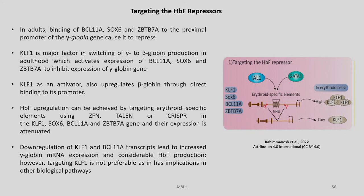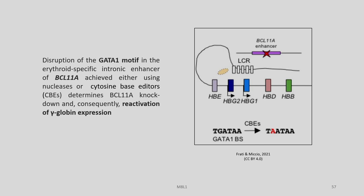Downregulation of KLF1 and BCL-11A transcripts leads to increased gamma globin and HbF production. However, targeting KLF1 is not preferable as it has implications in other biological pathways. Disruption of the GATA-1 motif in the erythroid-specific intronic enhancer of BCL-11A is achieved using nucleases or cytosine base editors (CBEs), determining BCL-11A knockdown and consequently reactivation of gamma globin expression.